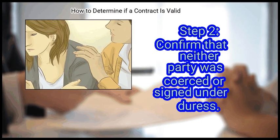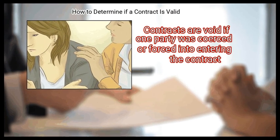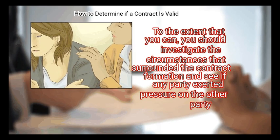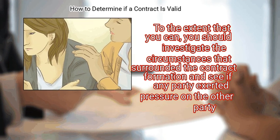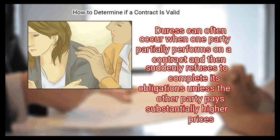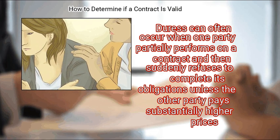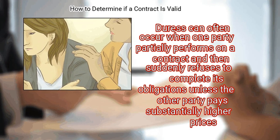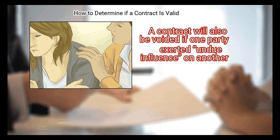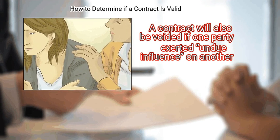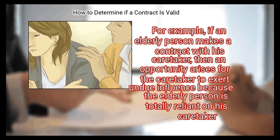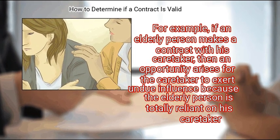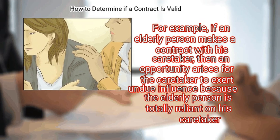Step 2: Confirm that neither party was coerced or signed under duress. Contracts are void if one party was coerced or forced into entering the contract. You should investigate the circumstances that surrounded the contract formation and see if any party exerted pressure on the other party. Duress can often occur when one party partially performs on a contract and then suddenly refuses to complete its obligations unless the other party pays substantially higher prices. A contract will also be voided if one party exerted undue influence on another — for example, if an elderly person makes a contract with his caretaker, an opportunity arises for the caretaker to exert undue influence because the elderly person is totally reliant on his caretaker.